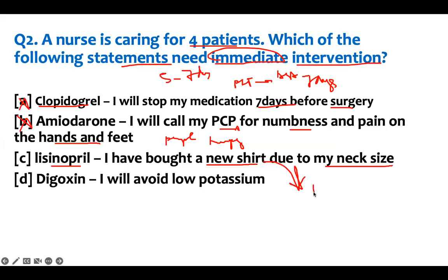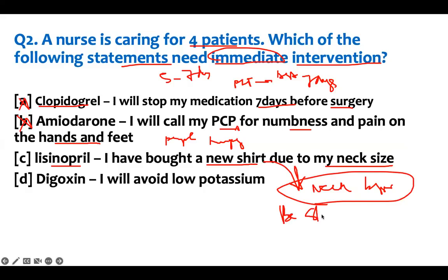Option C: a patient on Lisinopril says, 'I bought a new shirt due to my neck size.' This is a problem — the patient's neck is getting bigger. Why would someone on Lisinopril have an enlarging neck? This is what B-Sharp is about: something that doesn't make sense, you worry about. The patient is developing angioedema — the neck muscles are getting swollen, the airway will collapse. We need to intervene immediately.